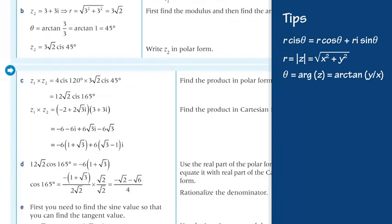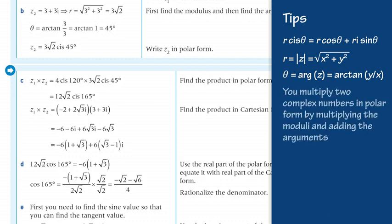Part c. In this part, apply the formula for the product of two complex numbers in polar form. You multiply two complex numbers in polar form by multiplying the moduli and adding the arguments. Applying this rule: 4∠120° multiplied by 3√2∠45° equals 12√2∠165°.